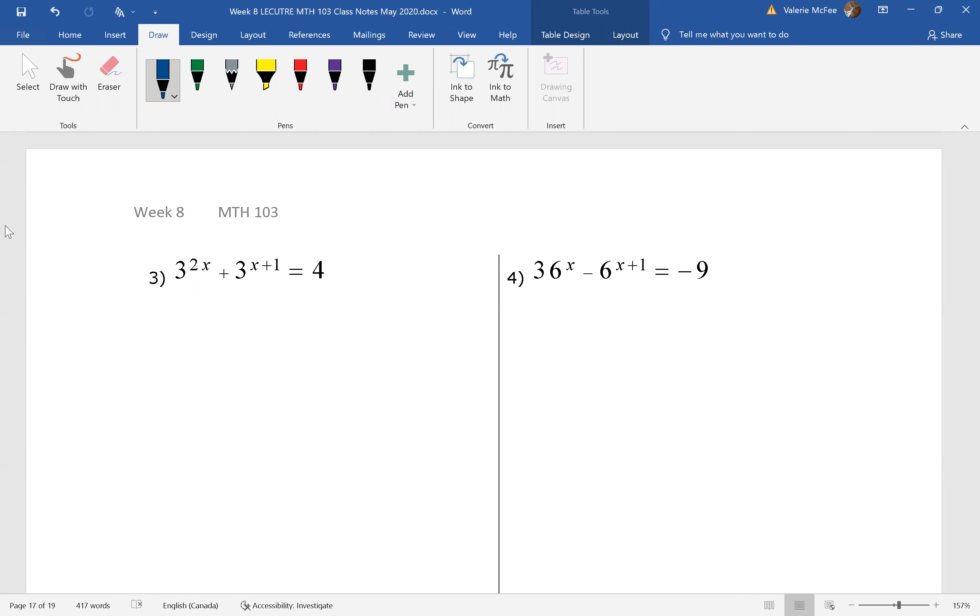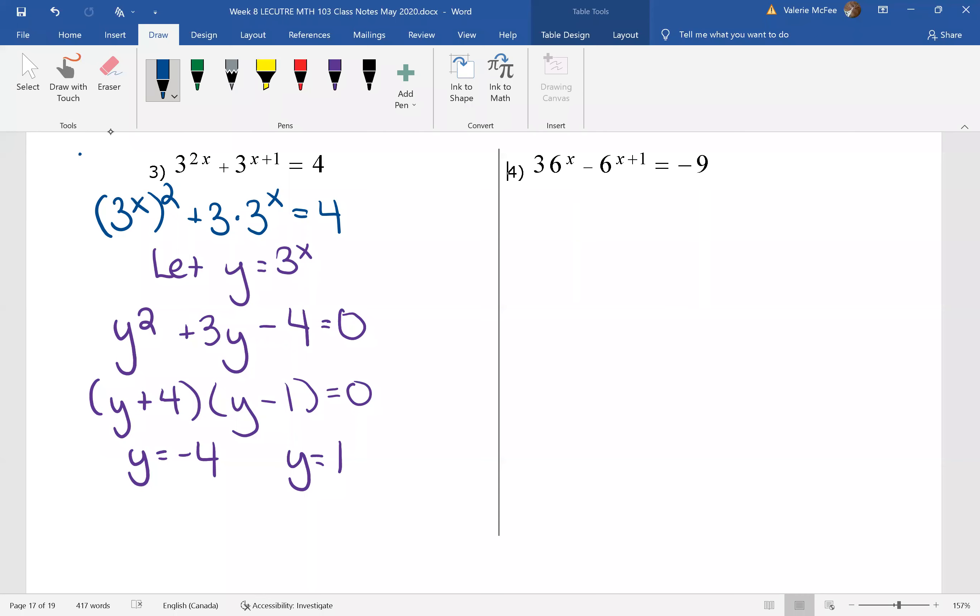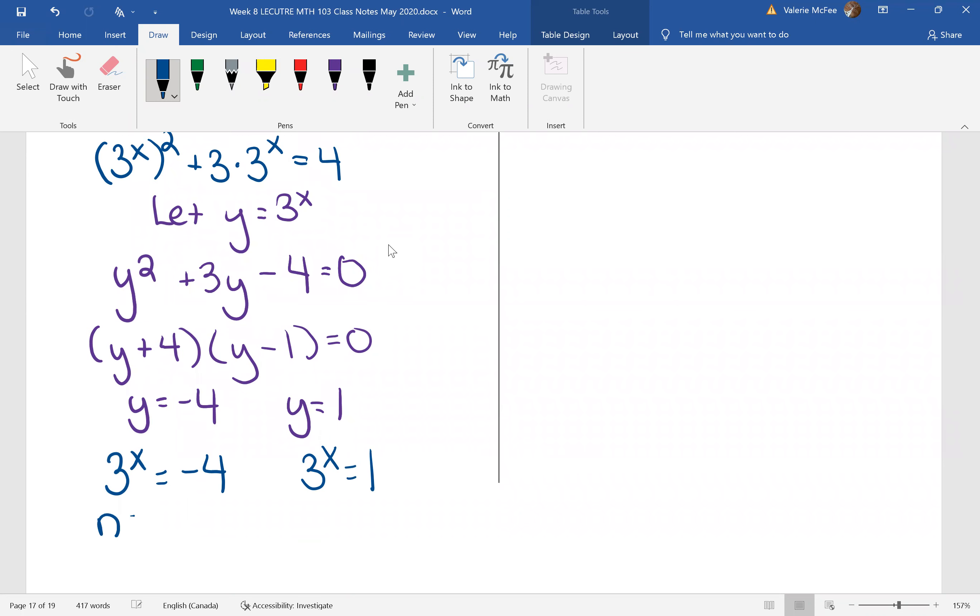Why don't you try question 3. You should have found two values for y and again substituted back. We know just like 2 to the power of x, 3 to the power of x cannot be less than 0. So our first equation here has no solution. 3 to the power of 0 equals 1. So x must be 0.